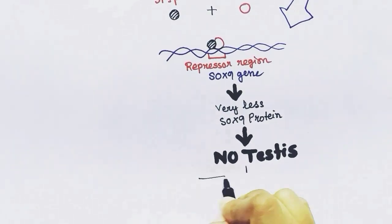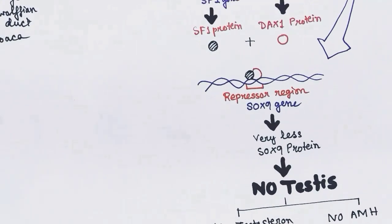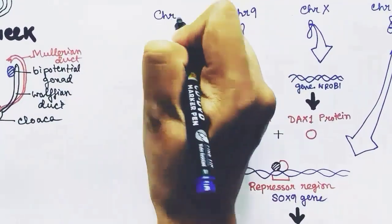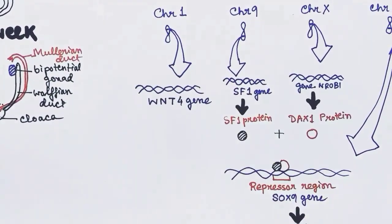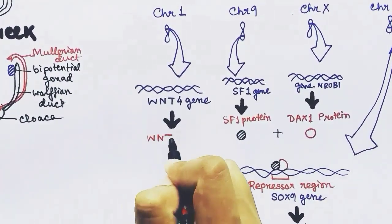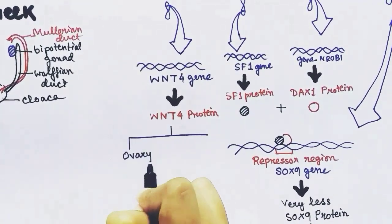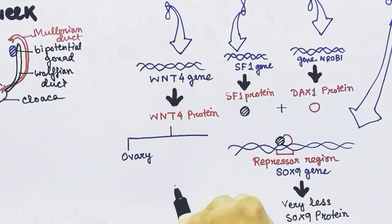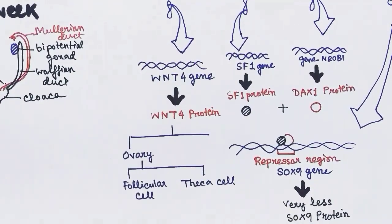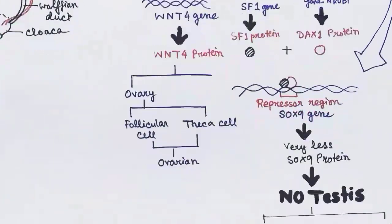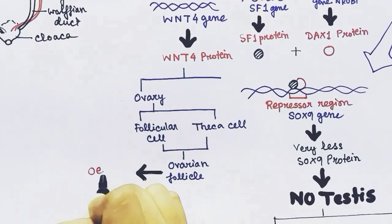In males, the one DAX1 protein from the single X chromosome is suppressed by the SRY protein from the Y chromosome. Additionally, from chromosome number 1, there is a WNT4 gene which forms WNT4 protein. This WNT4 protein drives development of the ovary, which contains follicular cells and theca cells inside.